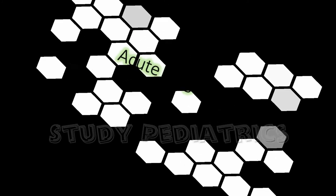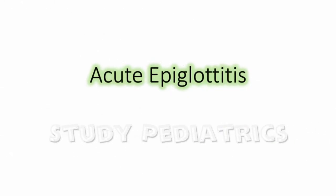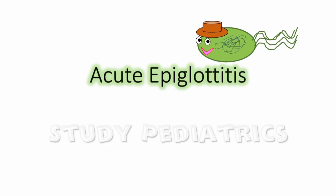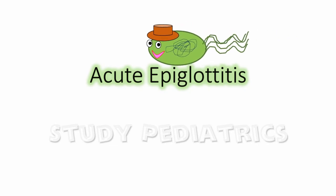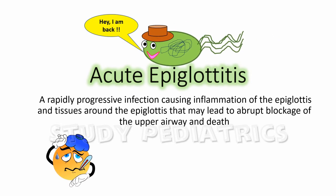Let's look into the causes of late onset stridor. Acute Epiglottitis is a rapidly progressing infection causing inflammation of the epiglottis and tissues around the epiglottis that may lead to abrupt blockage of the upper airway and may cause death.